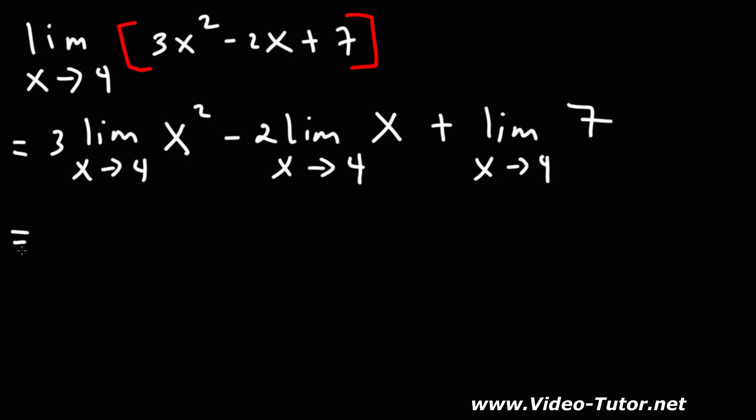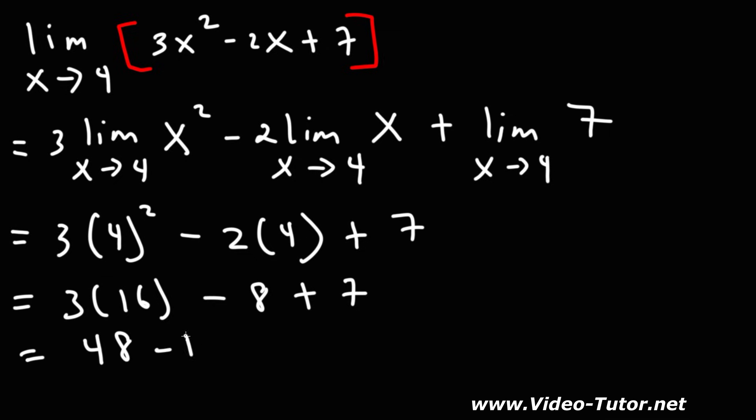Now let's use direct substitution. So this is going to be 3 times 4 squared minus 2 times 4 plus 7. 4 times 4 is 16. 2 times 4 is 8. And 3 times 16 is 48. Negative 8 plus 7 is negative 1. 48 minus 1 is 47. So this is going to be the final answer for this problem.